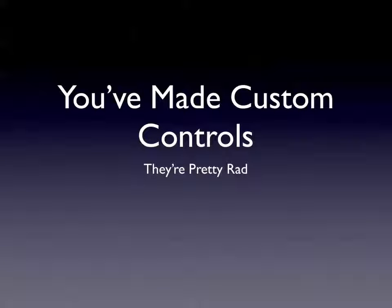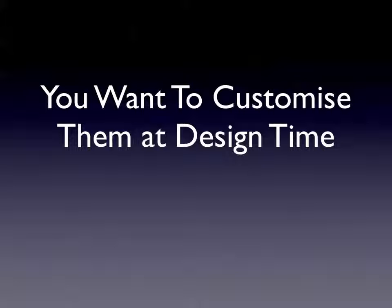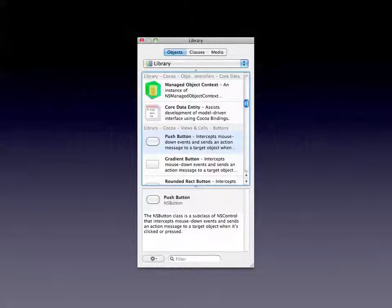So you've made some custom controls in the past — subclassing NSView, making your own controls and interacting with windows. But you want to be able to customize these controls and subclasses of NSView at design time, because right now all you can do is modify properties and parameters in code. You've seen Interface Builder's fantastic library of components, and you want to drag and drop your stuff just as easily as Apple's. Well, I'm here to show you how to do that.